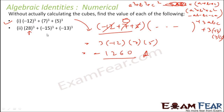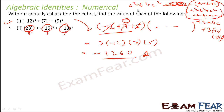Similarly for the other example, 28 − 15 − 13 = 0, so you can use the same approach. Since a + b + c = 0, the first part becomes zero, and you can use the formula directly to get the answer without actually calculating. You get these kinds of questions very often — understand the pattern. When the sum of three numbers is zero, you can directly use a³ + b³ + c³ = 3abc.